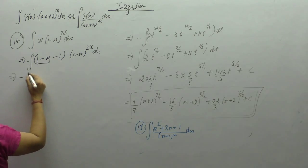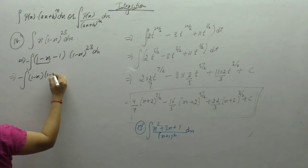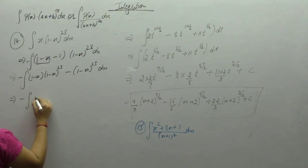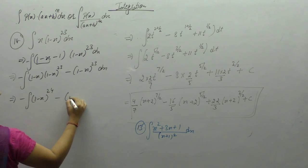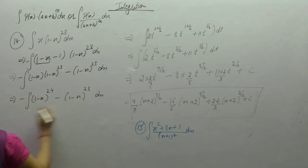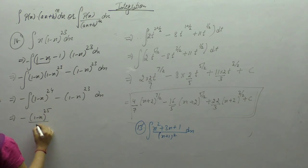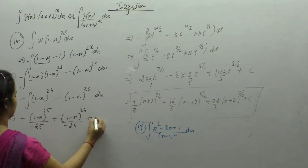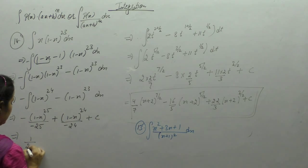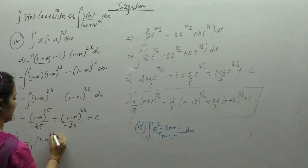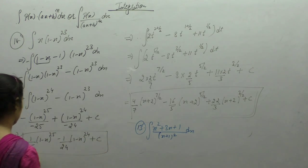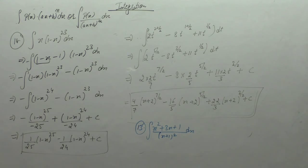Take (1 minus x) as one term: (1 minus x) into (1 minus x) to the power 23. We directly apply the power rule. Using x power m gives x power n plus 1: 24 plus 1 is 25, and 23 plus 1 is 24. The final answer is minus 1 by 25 times (1 minus x) to the power 25, plus 1 by 24 times (1 minus x) to the power 24, plus c.